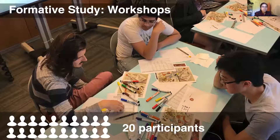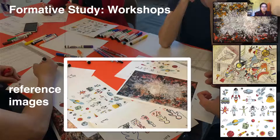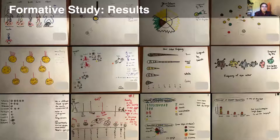Participants were given a data set and a collection of images covering a spectrum from well-defined objects to abstract paintings. We asked them to create visualizations of the data set that borrowed something from these reference images. Here is a small sample of the several visualizations created during the workshop. We analyzed their creations by comparing with the reference images and accounting for their explanatory tags when provided.